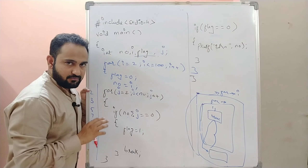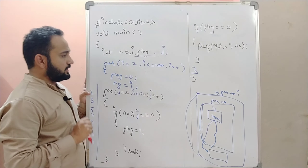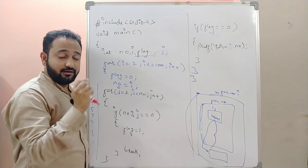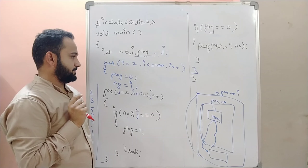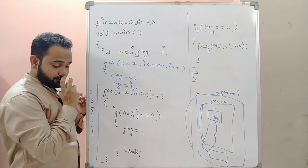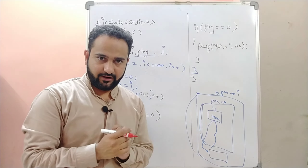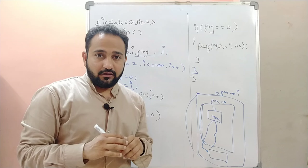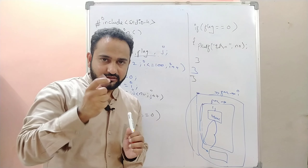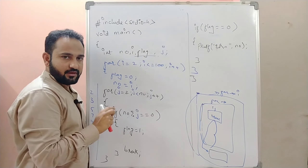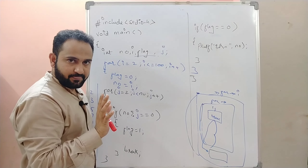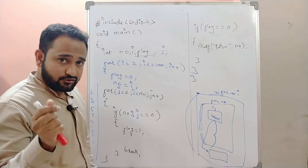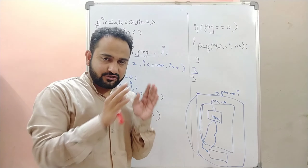Now the next question is: how do we print the first hundred prime numbers? Before we start the solution, let me be clear — there can be a new form of this question, but don't overthink it; just stick to the basics. We were printing all prime numbers between two to hundred, and if we iterate from two to two hundred it's possible we print a hundred primes, but we need to be very specific — we have to print only the first hundred prime numbers.